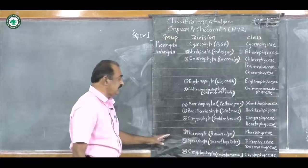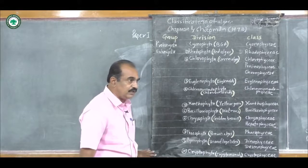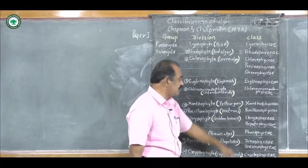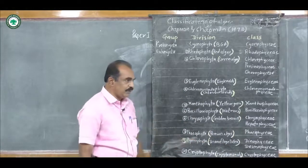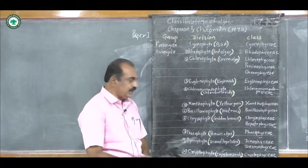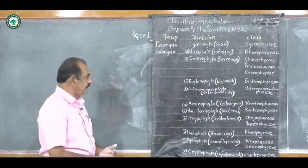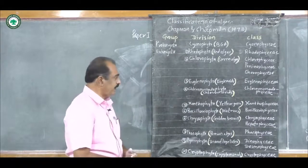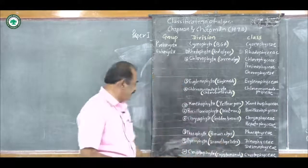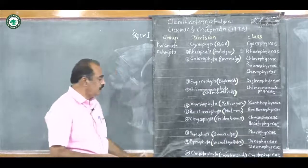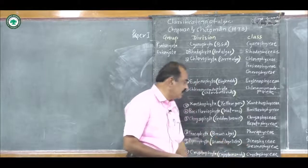Seventh division is Chrysophyta, called golden brown because their color is golden brown, with two classes: Chrysophyceae and Haptophyceae. Eighth division is Phaeophyta — called brown algae — with only one class: Phaeophyceae. Ninth division is Pyrrophyta, which includes the dinoflagellates, with two classes: Dinophyceae and Desmophyceae. The last division is Cryptophyta, called cryptomonads, with only one class: Cryptophyceae. Thank you.